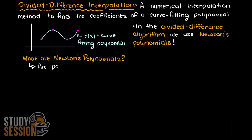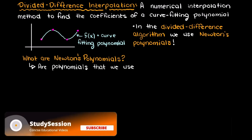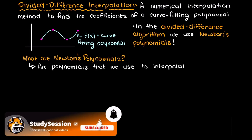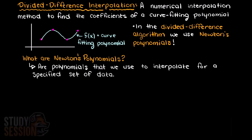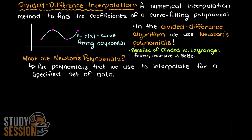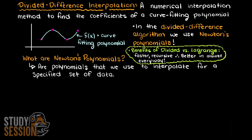Newton polynomials are just polynomials used to interpolate discrete data points from a given data set. You may ask: we have learned about Lagrange polynomials, why can't we just use those? Well, Newton polynomials through divided difference has many advantages — it is faster, recursive, and through such, better, faster, and much more widely used than the Lagrange polynomials.